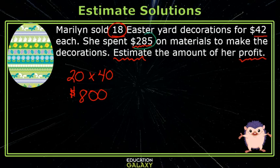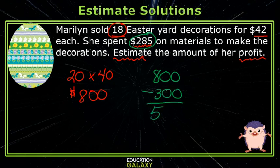Next, we need to take out her expenses. She brought in $800, and to take out her expenses, that means we subtract it. I'm going to round the $285 to $300, and I subtract. So Marilyn's profit was approximately $500.